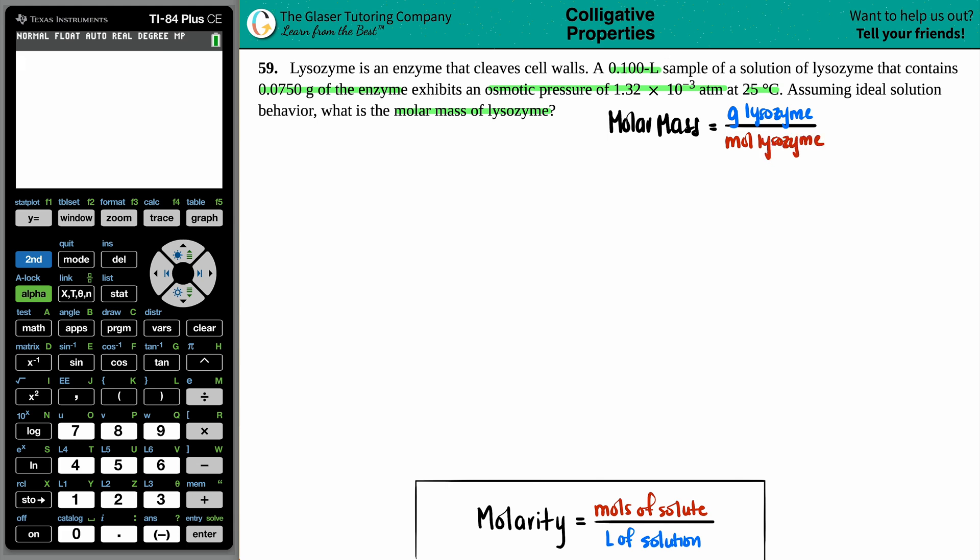Well, let's see. Did they tell us how many grams of the lysozyme we have? Yeah, it said that we had the lysozyme that contained 0.0750 grams of that enzyme. The enzyme is lysozyme. So we know the top part. We know 50% of the question. 0.0750 grams.